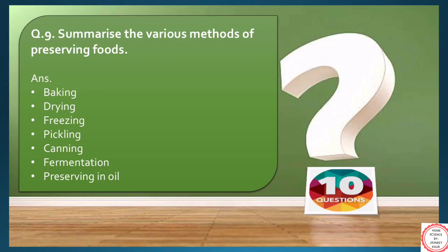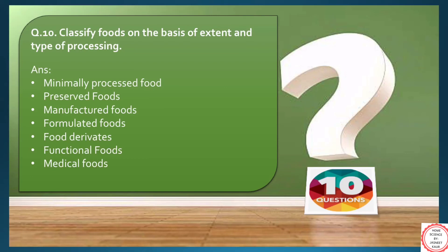Moving on to the last question, it is about the classification of foods on the basis of extent and type of processing. It includes minimally processed food, preserved foods, manufactured foods, formulated foods, food derivatives, functional foods and medical foods.